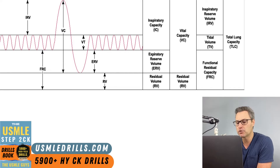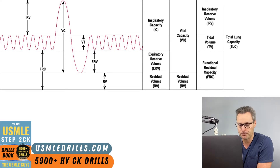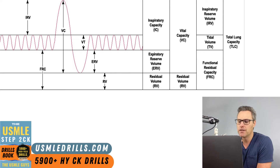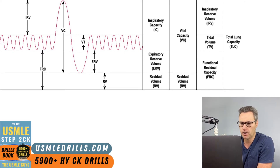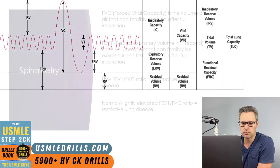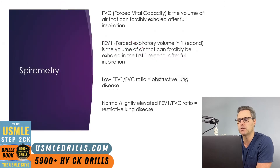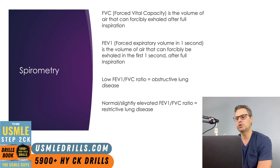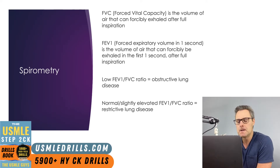We can calculate inspiratory capacity by adding tidal volume and inspiratory reserve volume. The expiratory reserve volume is the maximum amount of air that can be exhaled from the end expiratory position. Now that we've defined those terms as they relate to the respiratory cycle, there are two critical findings that are obtained from spirometry.